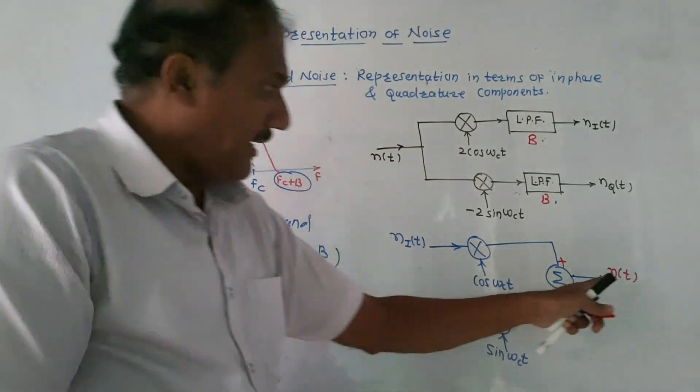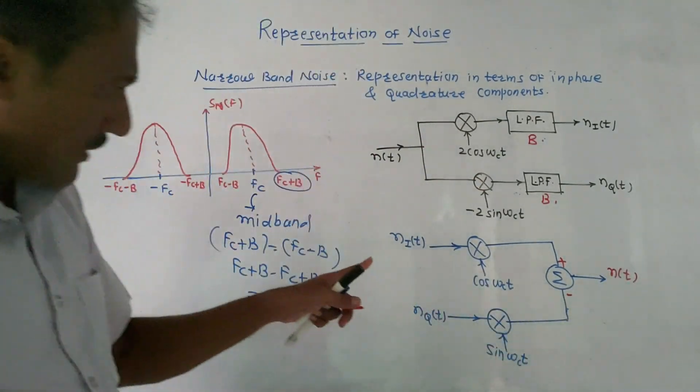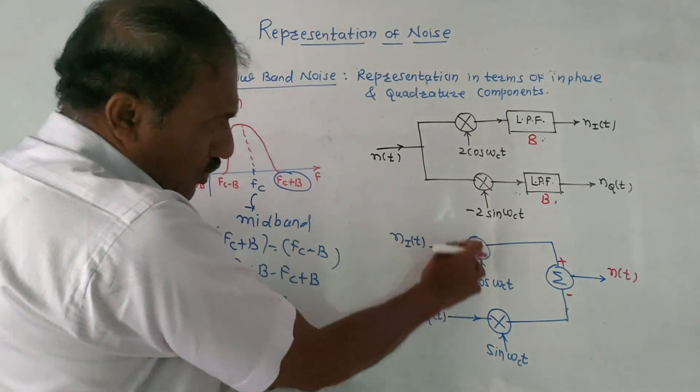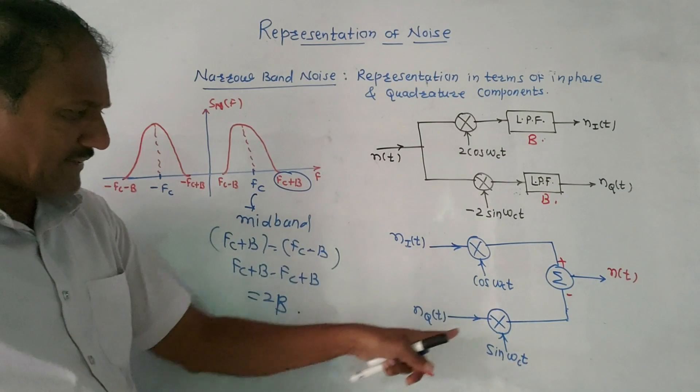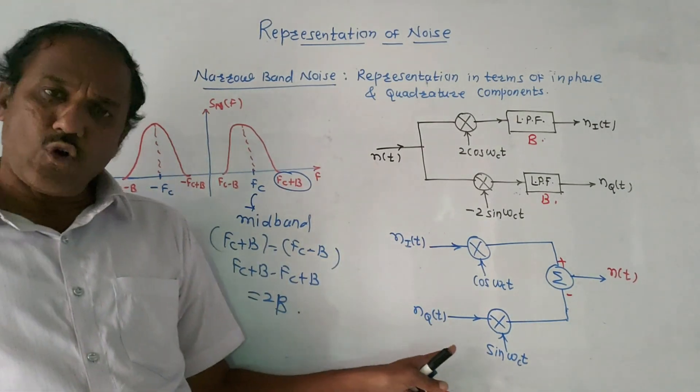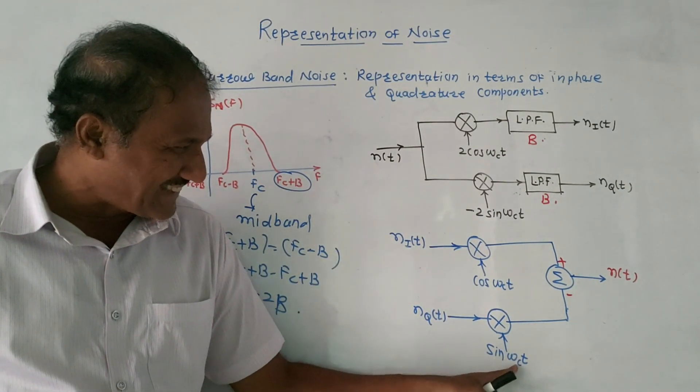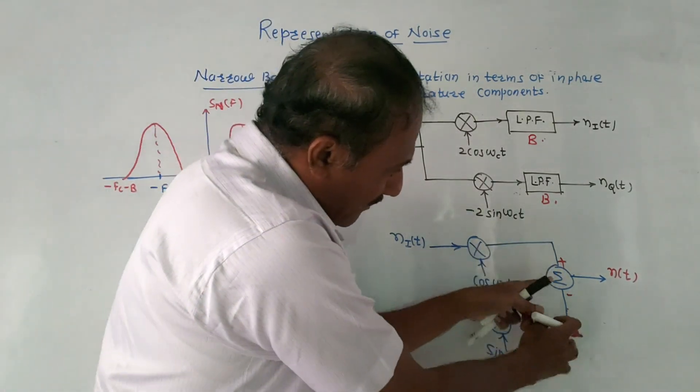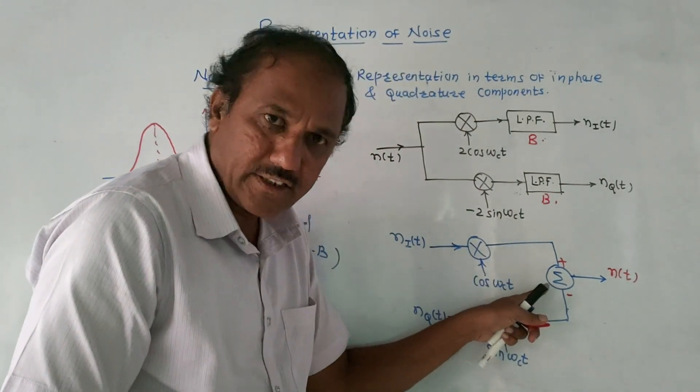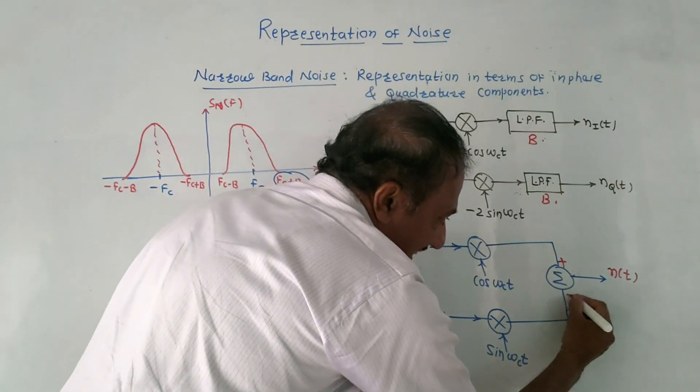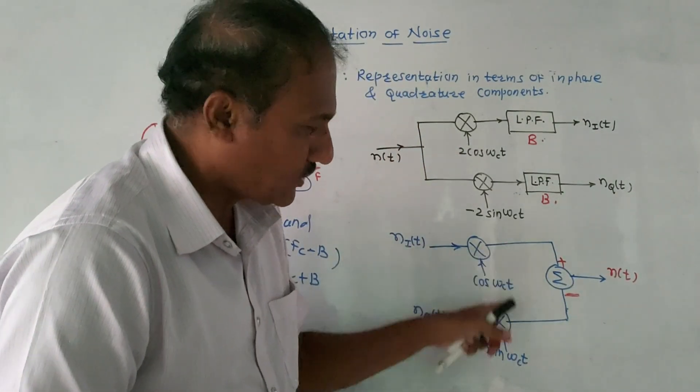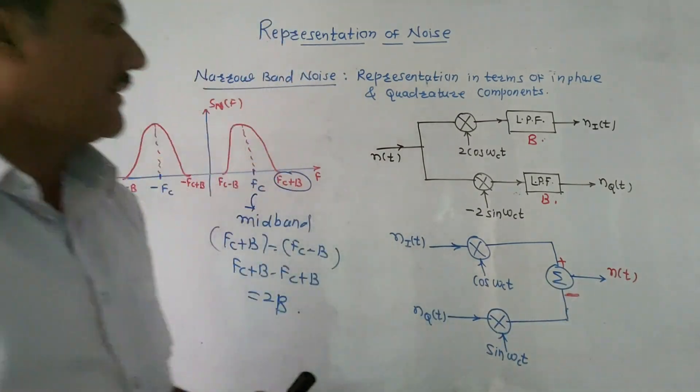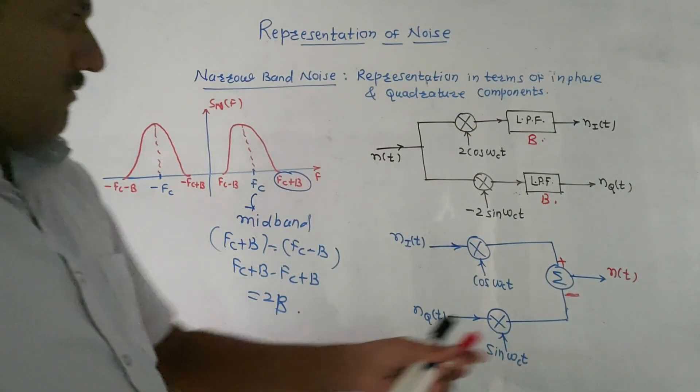Second, these two diagrams - this diagram shows if you have in-phase component and quadrature component, how to generate this n(t) noise signal. Simple technique - again I have shown some multipliers. ni(t) is multiplied with cos(ωct), and nq(t) quadrature component is multiplied with sin(ωct). After multiplying these two, output of multiplier is applied to the adder. This block is adder. Here there is a minus sign, so this component will get subtracted from cosine component.